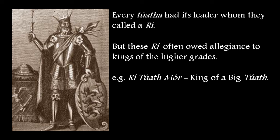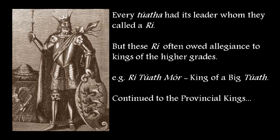And in turn, whether he is just a rí or a rí tuath mór, they too would find themselves in tribute to a king of the next highest grade, which usually meant a king of one of the five provinces of Ulster, Munster, Connacht, Leinster, and Meath. At the time when this was the case, the five provincial kingdoms were known as the Pentarchy.